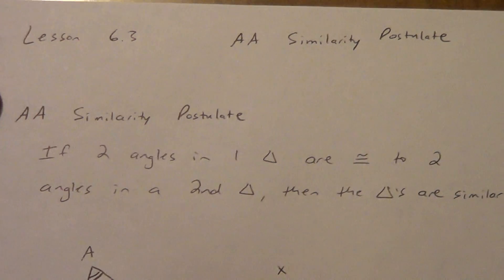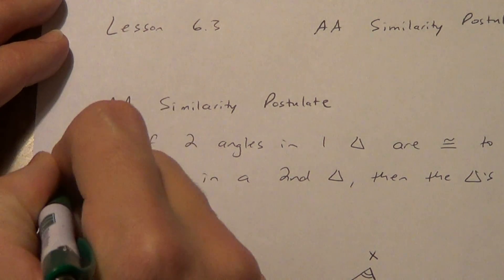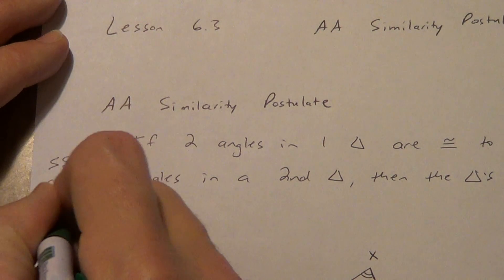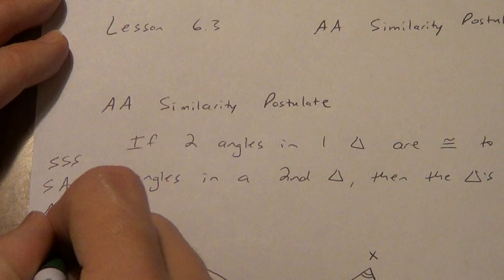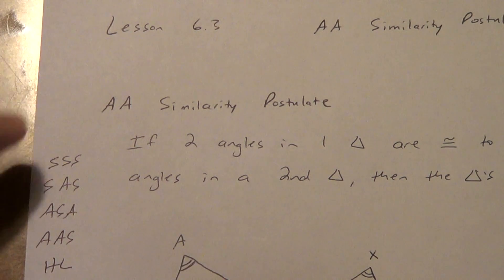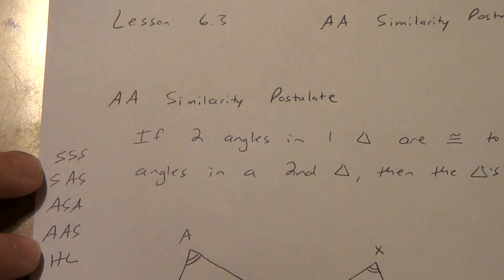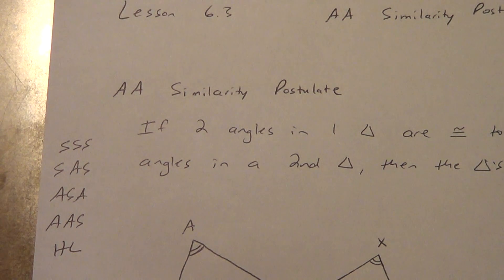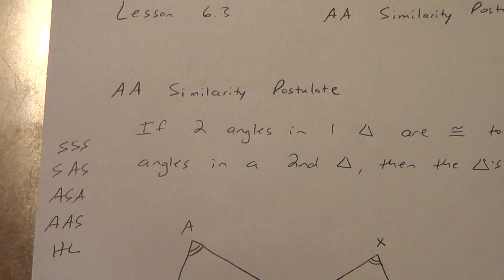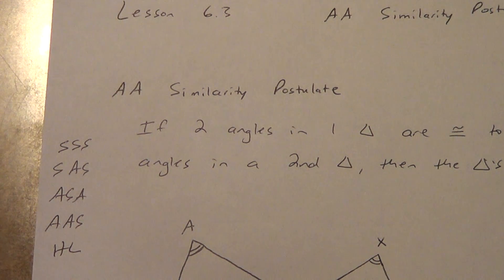Remember all the ones we had before? Side-side-side, side-angle-side, angle-side-angle, angle-angle-side, and HL. The top three are postulates, these two are theorems — these are all for congruence. Remember we said that side-side-angle doesn't work unless the angle is a right angle, and that's when we call it HL. And we also said angle-angle-angle doesn't work.